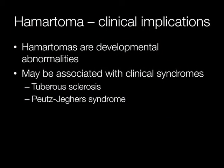Hamartomas are developmental abnormalities, and they are clinically important because they may be associated with clinical syndromes. One example is tuberous sclerosis and another is Peutz-Jeghers syndrome.